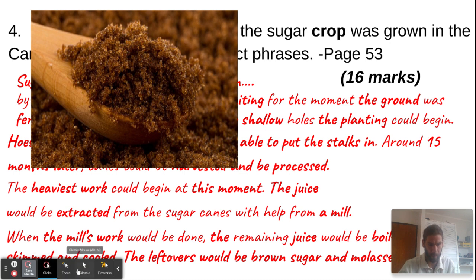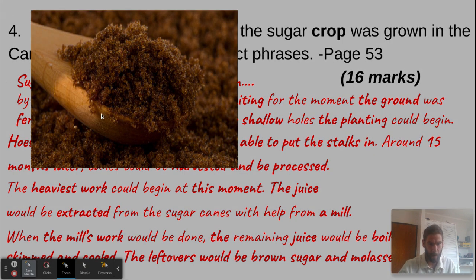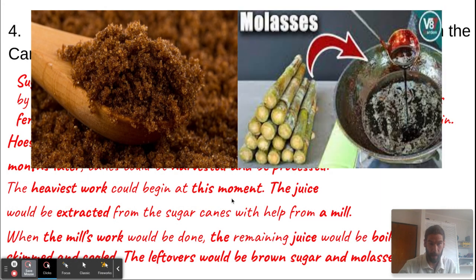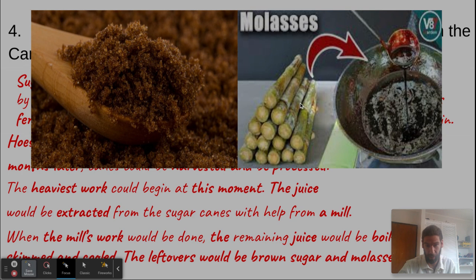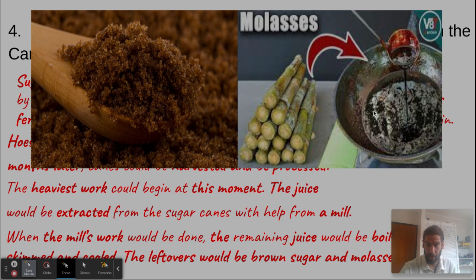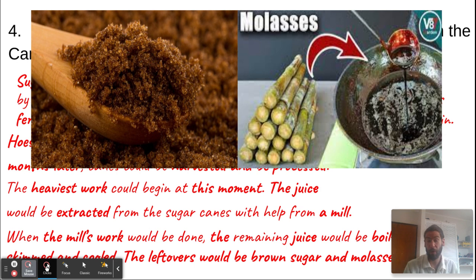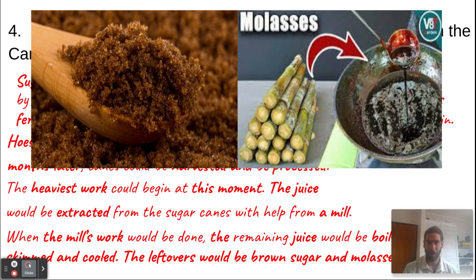From the molasses, rum would be made. As you can see in the picture, the brown sugar is the leftover on one hand, and the molasses — the gooey, dark browny stuff — is the basic ingredient of rum. That would be the result of all the hard work and labor. I hope you found this informative and helpful. I wish you a very deserving and recharging Easter break, and I will see you next week — enjoy your day.